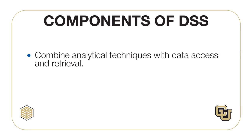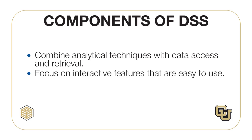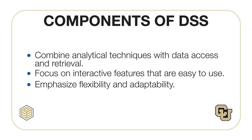There are three key characteristics of a DSS system. First, they combine analytical techniques like using models with data access and retrieval functionality. Second, they focus on interactive features that are easy to use. And third, they emphasize flexibility and adaptability so that they can accommodate changes in the business environment and in decision-making approach and style of a decision-maker.